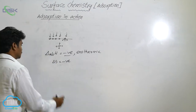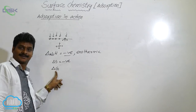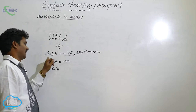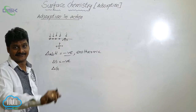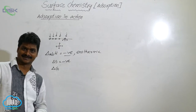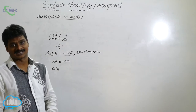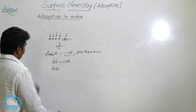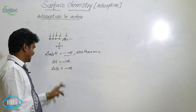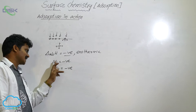So enthalpy of adsorption is negative and entropy of adsorption is also negative. What is delta G? Delta G means change in Gibbs free energy. It is an important factor for deciding whether a process is spontaneous or non-spontaneous — neither delta H alone nor delta S alone can decide this. It was found that delta G is negative for the adsorption process. So the thermodynamic parameters are: delta H negative, delta S negative, delta G negative.